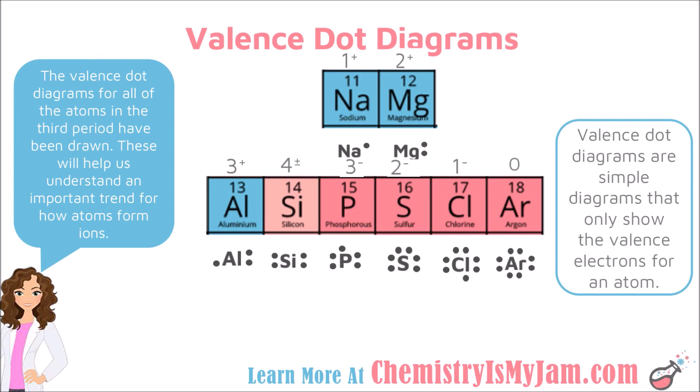Phosphorus is our first nonmetal. It has 5 valence electrons. Since it wants 8, the easiest way to achieve a full outer energy level is to take 3 electrons from another atom, leaving phosphorus with a charge of minus 3. Sulfur has 6 valence electrons — it takes 2, leaving a charge of minus 2. Chlorine has 7 valence electrons — it takes 1, leaving a charge of minus 1.